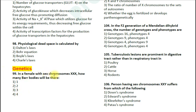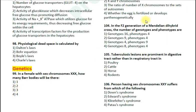Question number 99: In a female with sex chromosome triple X, how many bar bodies will be there? The options are one, two, three, and four. The correct answer is option number two. The number of bar bodies is always one less than the number of X chromosomes.